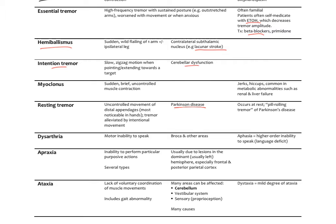Dysarthria is a motor inability to speak, often due to damage of the Broca area and premotor cortex areas. Aphasia is a higher-order inability to speak — a language deficit. An aphasia might have dysarthria as part of it, but it involves higher cortical centers. A stroke to Broca's area in the left hemisphere can result in a non-fluent aphasia, clinically characterized as a type of dysarthria.